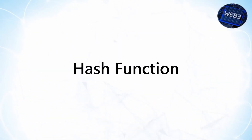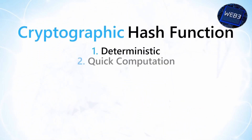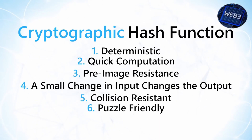A cryptographic hash function is a special class of hash function that makes it ideal for cryptography. There are six properties that a cryptographic hash function needs to have in order to be considered secure. Let's go through them one by one.